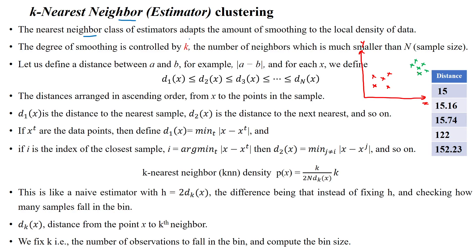The nearest neighbor is used to estimate the amount of smoothing to the local density of given data points. The degree of smoothing is controlled by the value k — the number of nearest neighbors — which is much smaller than the given number of samples in the sample space.